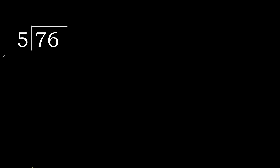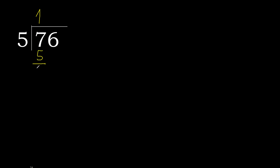76 divided by 5. Let's start with 7. 5 multiplied by which number is nearest to 7 but not greater? 5 multiplied by 2 is 10 — that is greater. 5 multiplied by 1 is 5 — that is not greater. So 7 minus 5 is 2.